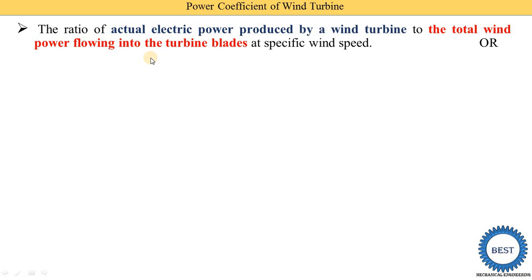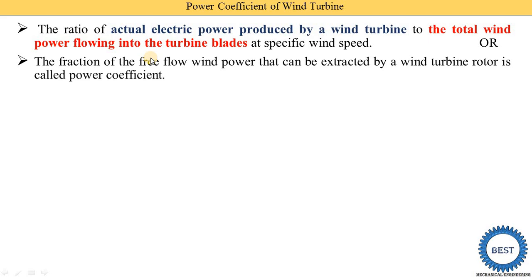This definition is also written like this way. The fraction of the free flow wind power that can be extract by wind turbine rotor, it is called as the power coefficient of wind turbine rotor.